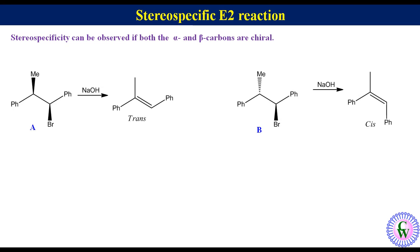Now, let's see how this happens. For better understanding, let's redraw diastereomer A so that H and Br are anti-periplanar and in the plane of the page. If we view from the left, its Newman projection will look like this.